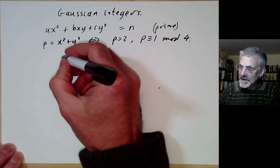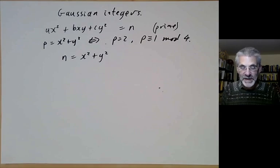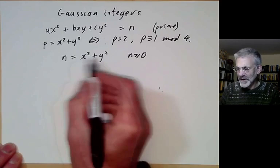We want to study which integers n can be represented as x²+y² and in how many ways. We take n to be at least zero, otherwise the question is trivial.